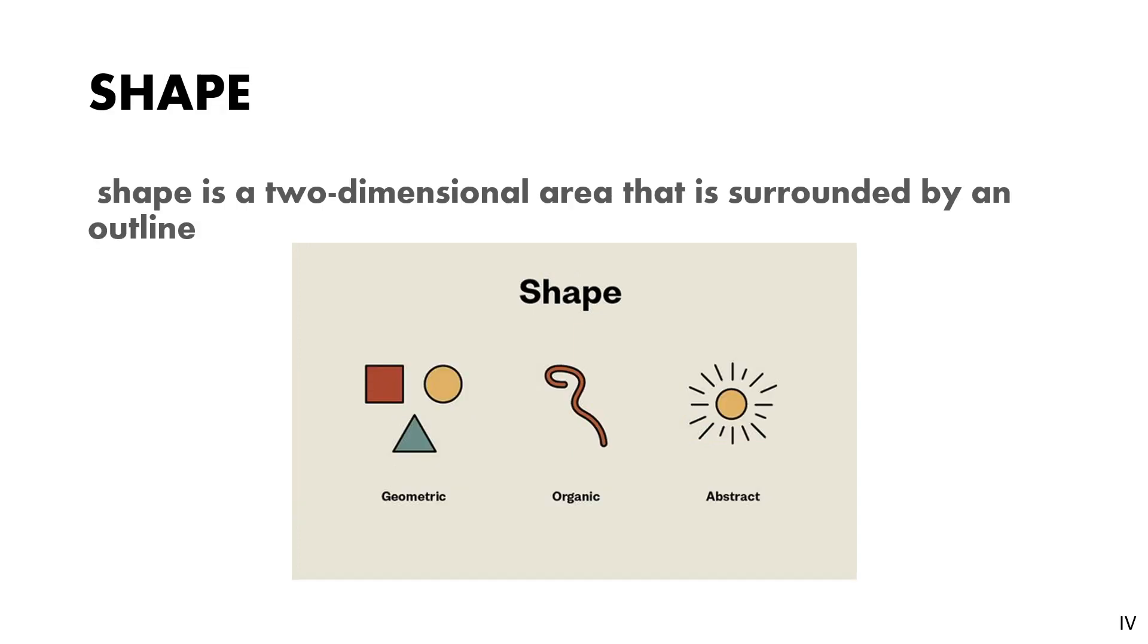Second element of design is shape. Shape is a two-dimensional area that is surrounded by an outline. So any structure drawn in two dimensions and it must be a closed boundary, real or implied, then we can call it a shape. Shapes are of three types.